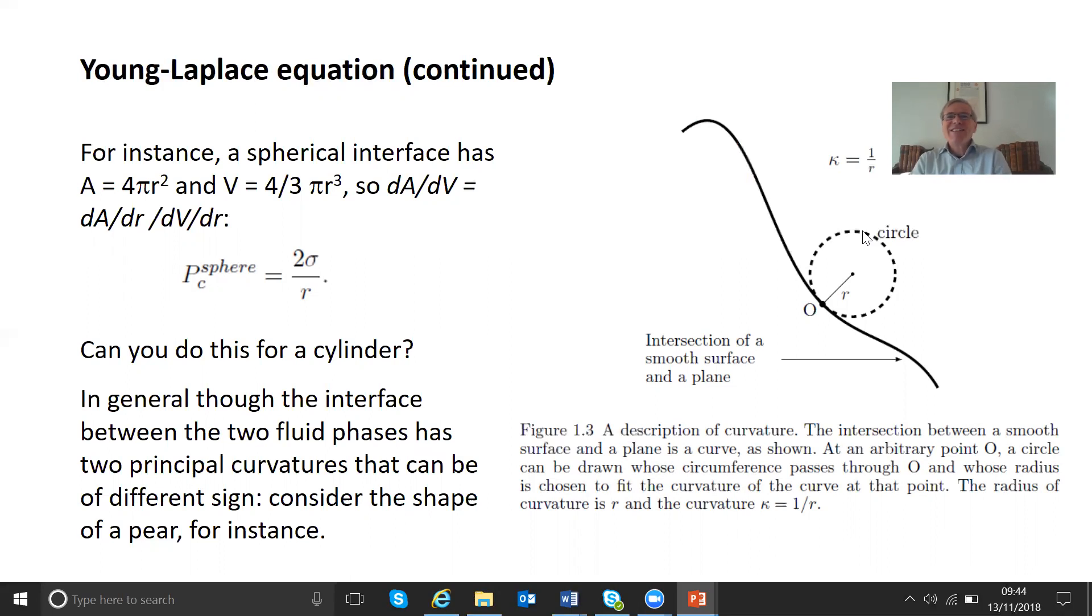dV/dR is 4πr². It's actually the same as the area, because the three goes because it's 4πr². So the capillary pressure, which is dA/dV times σ, there's a power of 2, sorry, not a power of 2, there's a factor of 2, 2σ over r. So the capillary pressure for an interface that is spherical.